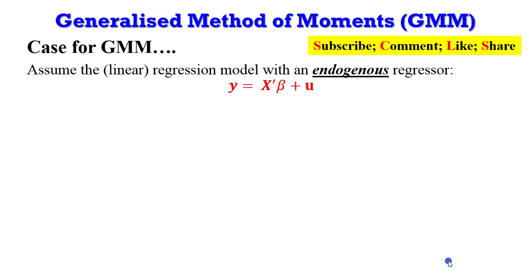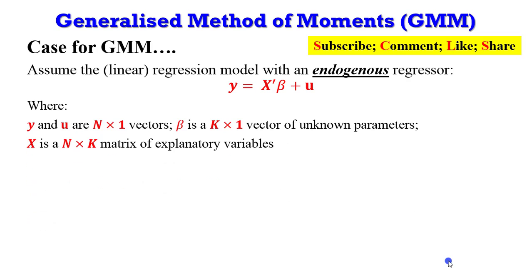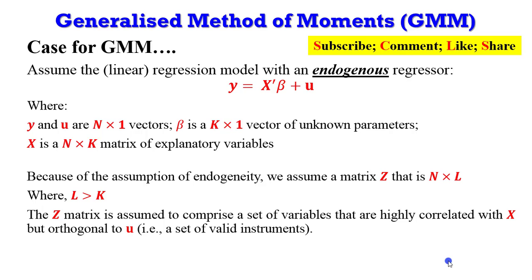Now, what is the case for GMM? We assume a linear regression model with an endogenous regressor, given by y = X'β + u, where u is the error term, y and u are N×1 vectors, β is a K×1 vector of unknown parameters, and X is an N×K matrix of explanatory variables. Because of endogeneity, we assume another matrix Z that is N×L where L > K. The Z matrix comprises variables highly correlated with X but orthogonal to — that is, uncorrelated with — the error term.